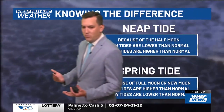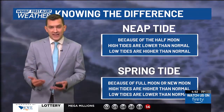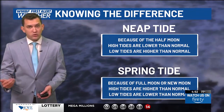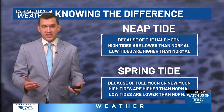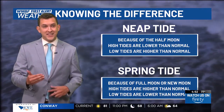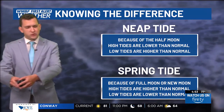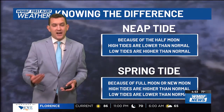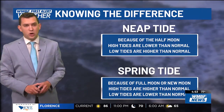To recap: neap tides occur during a half moon or last quarter moon — high tides are lower than normal, and low tides are higher than normal. Spring tides occur during a full moon or new moon when the sun, Earth, and moon are all aligned together. There's a stronger gravitational pull, which means high tides are higher than normal and low tides are lower than normal.